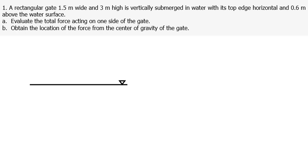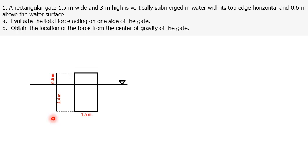The gate has its top edge horizontal and 0.6 meters above the water surface. Since the height of the gate is 3 meters, the height submerged in water is equal to 3 minus 0.6, which is 2.4 meters. We project the cross-section of the gate — a rectangle 1.5 meters wide and 3 meters tall — and consider only the submerged portion to identify its center of gravity, CG. The CG is located 1.2 meters from the liquid surface and 1.2 meters from the bottom of the gate.